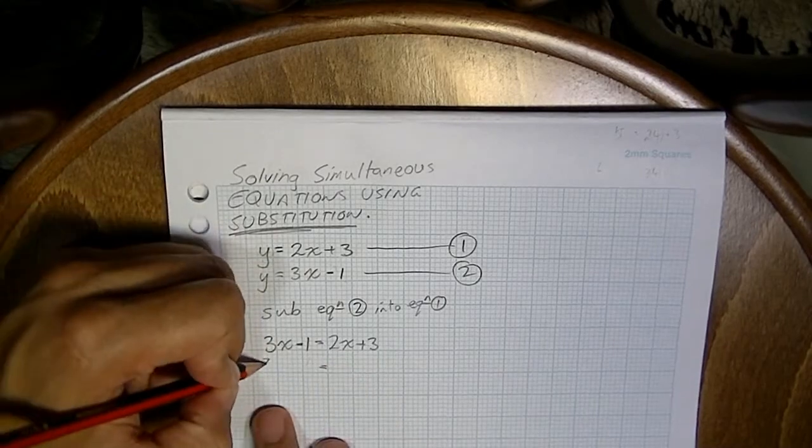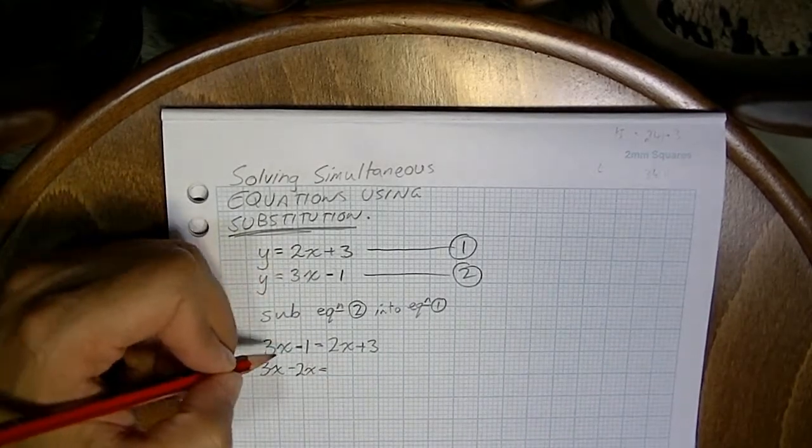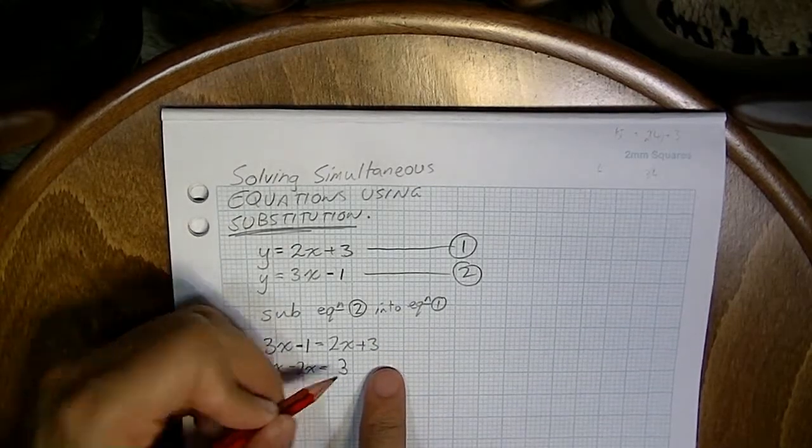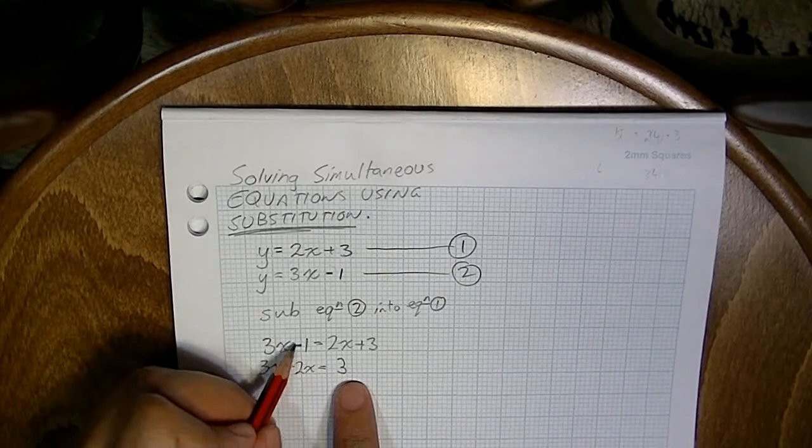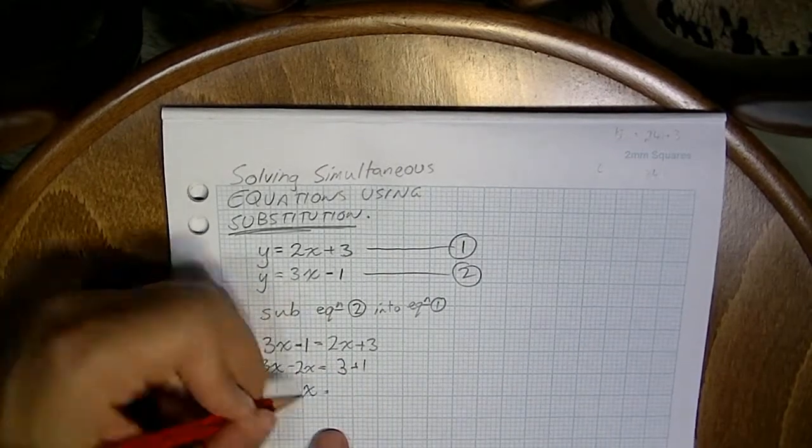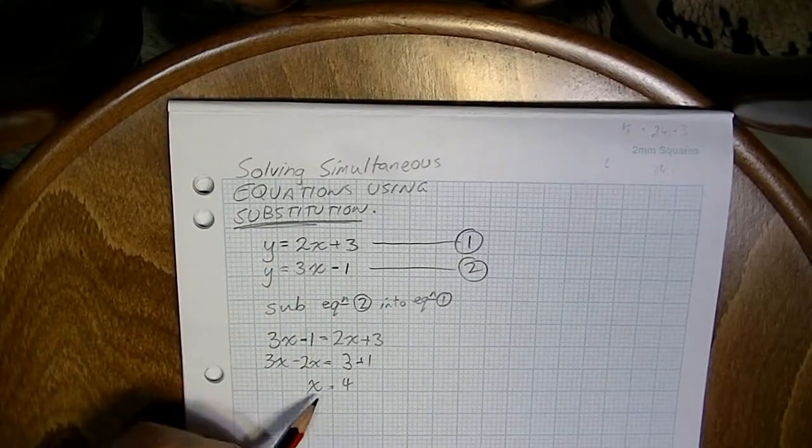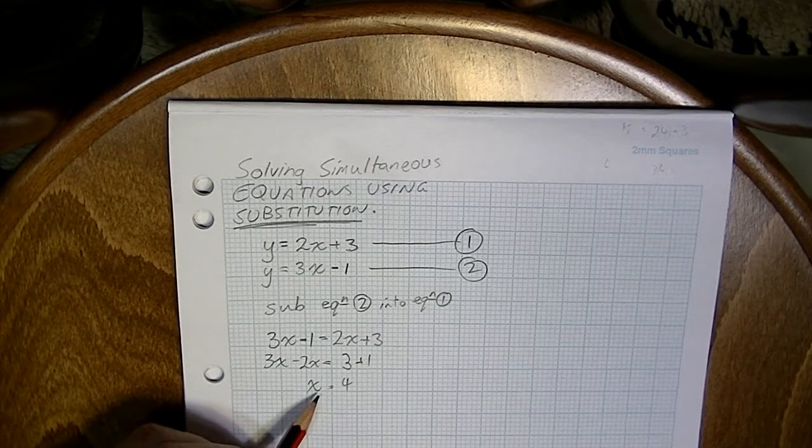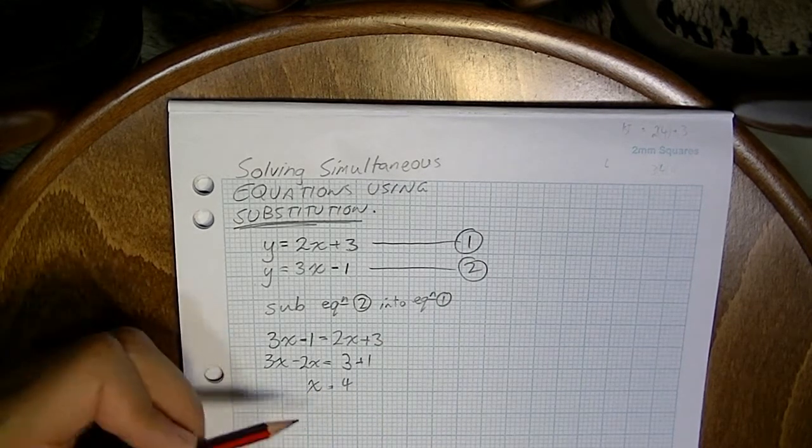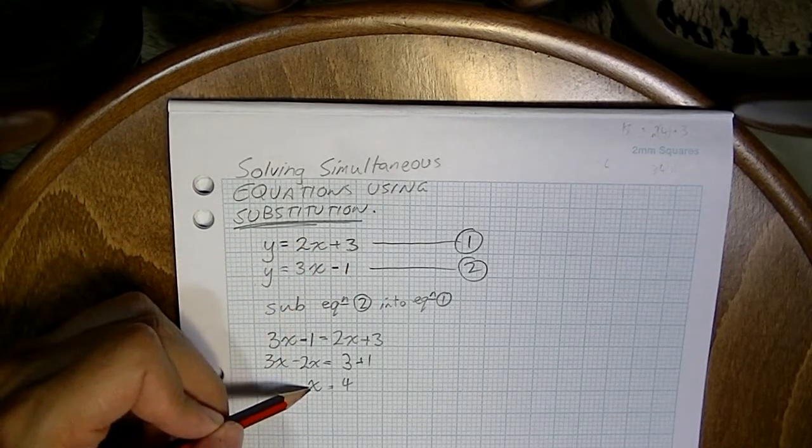We need to group our like terms. So 3x minus 2x. Moved all the x's from either side to the left side. I'm going to move all the constants from one side to the other. It's going to be 3. That negative 1 is going to become positive 1. 3x minus 2 is just x. 3 plus 1 is 4. Now, we have an x value here of 4.